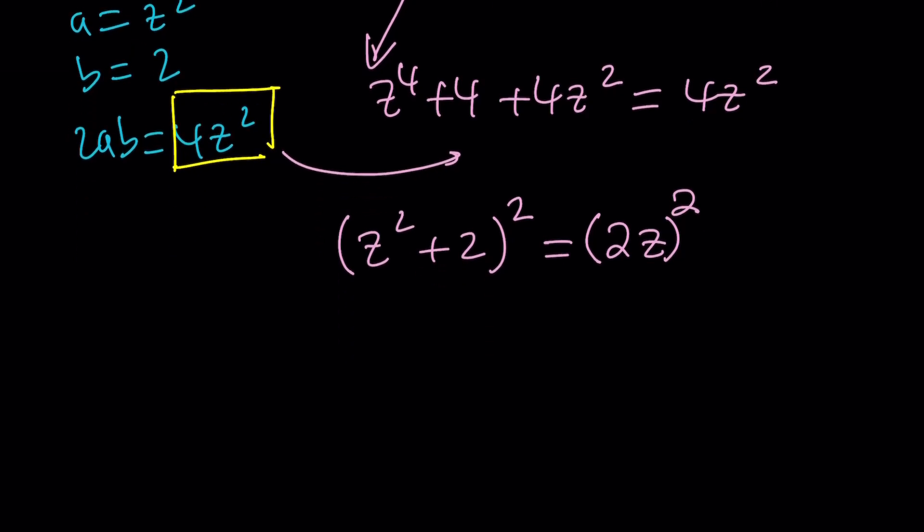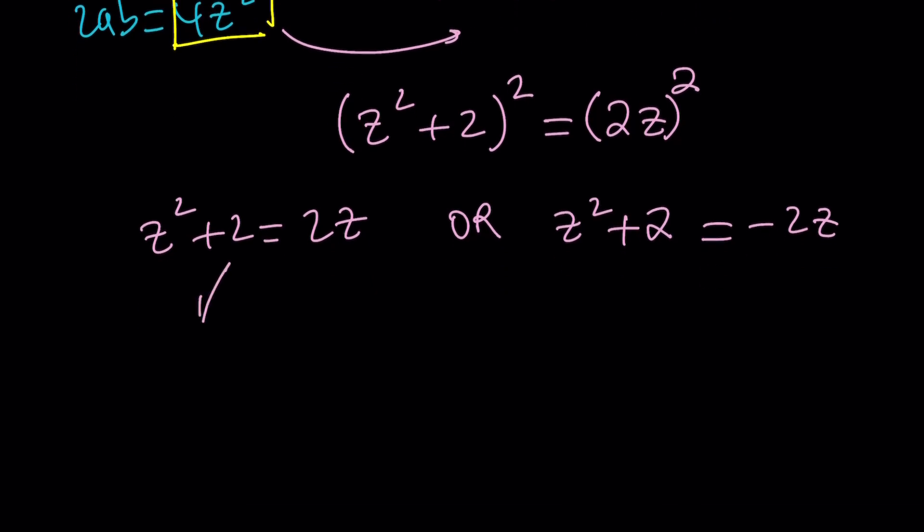Now, when you have a squared equals b squared, obviously you can solve it with the square roots, the absolute value, so on and so forth. You could also subtract 2z quantity squared and then factor it with difference of two squares. Either way is fine. Let's use the first method. z squared plus 2 is either 2z or z squared plus 2 is negative 2z because there are two numbers whose squared equals 4z squared. Those are 2z and negative 2z. And this gives us two quadratic equations.